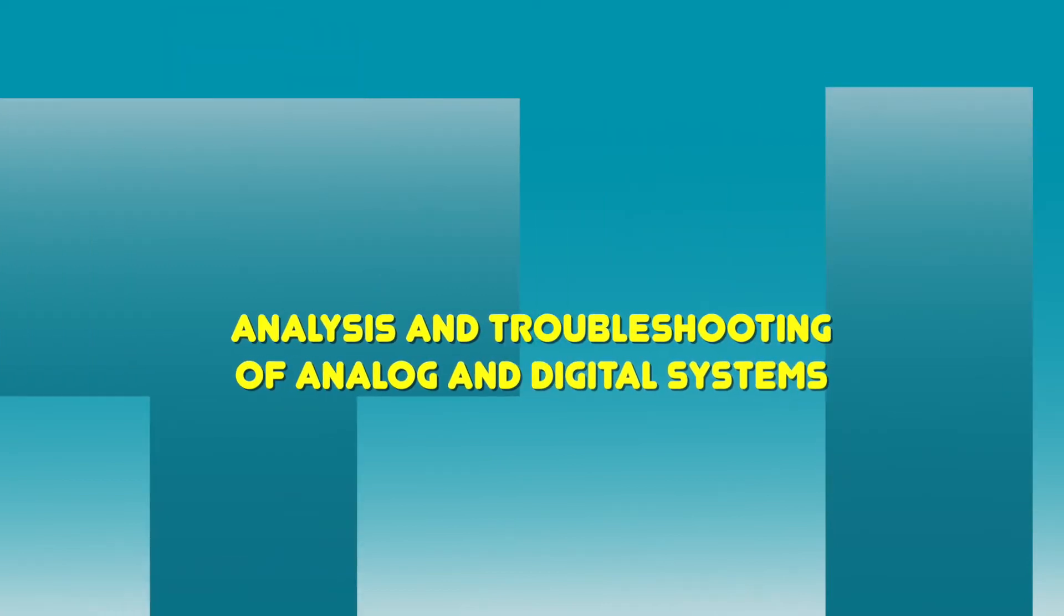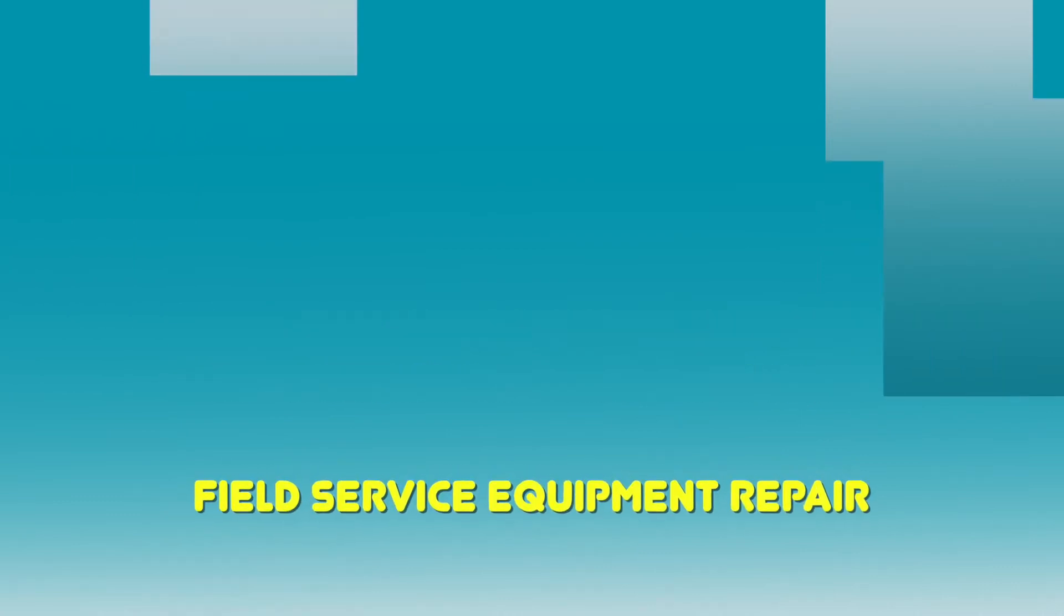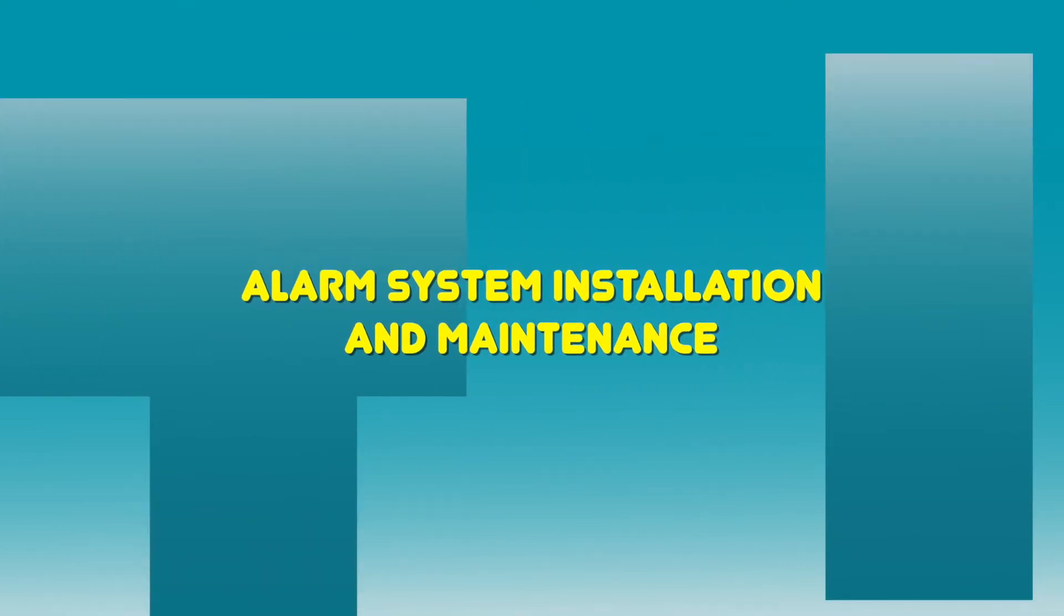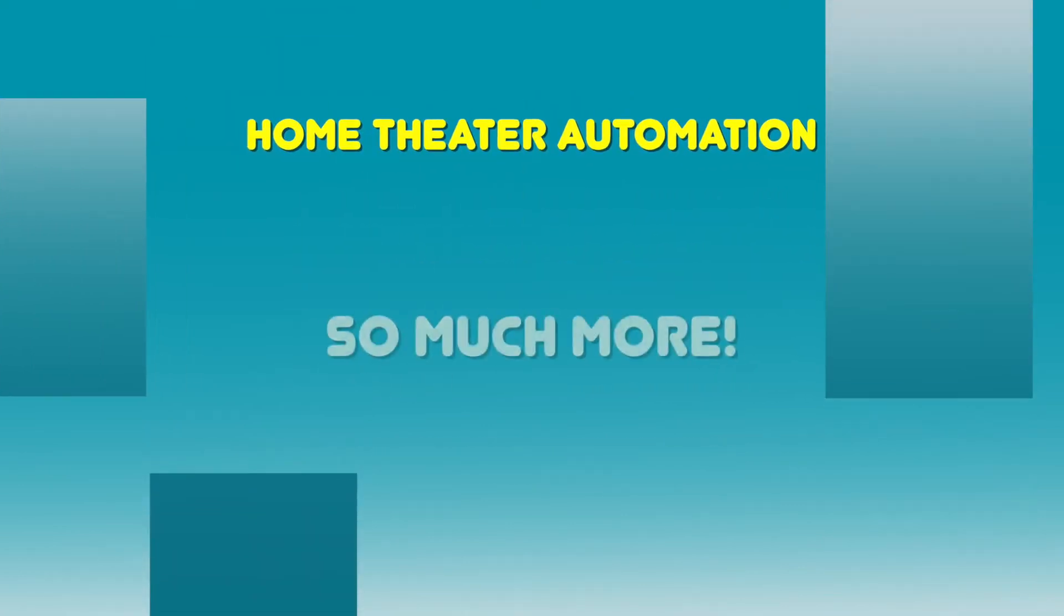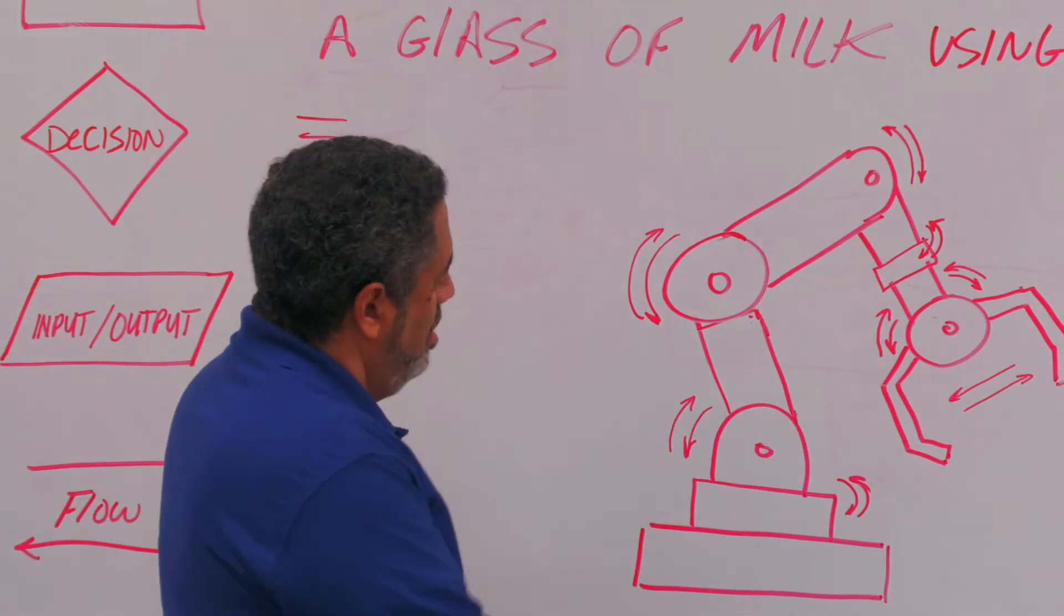Analysis and troubleshooting of analog and digital systems, field service equipment repair, quality control and inspection, cable installation, alarm system installation and maintenance, home theater automation, and so much more. We have a robot arm that has a base that can swivel.